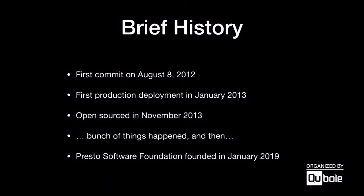Looking at the history of Presto, we started in August 2012 — the first commit was August 8th, so it's just over seven years now. We went to production with the first version in January, about six months later. Then later that year in 2013, we open-sourced it and a bunch of people picked it up and started using it and contributing. Earlier this year, we founded the Presto Software Foundation.